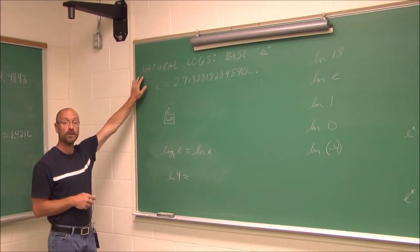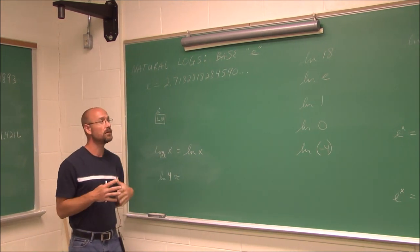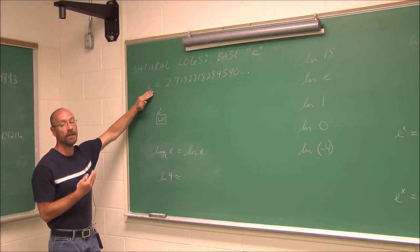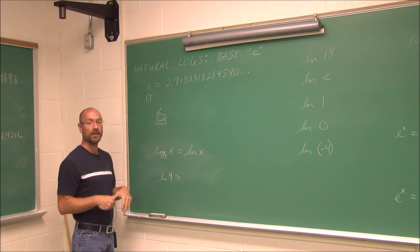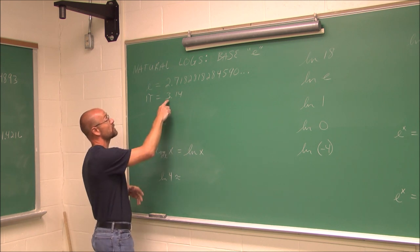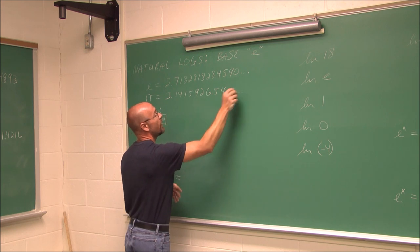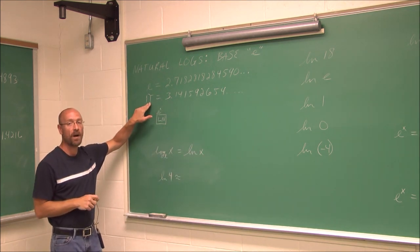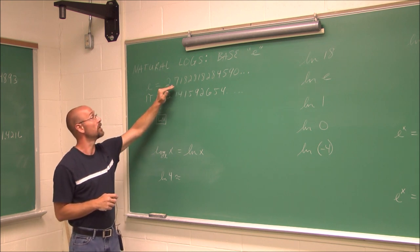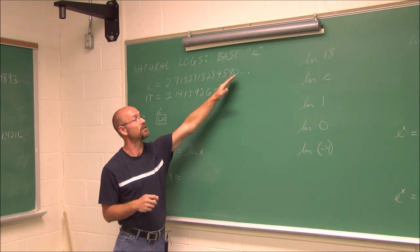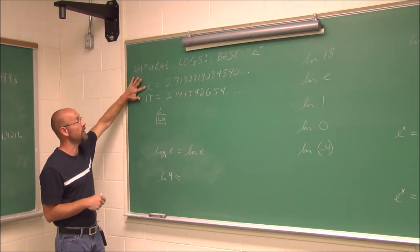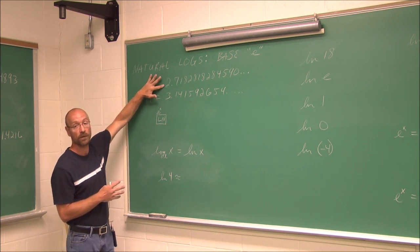Let's look at another type of log called the natural log. This is base e. We touched on the natural number in a previous video. E is nothing more than an irrational number. If we think about pi — 3.14159... — we should become familiar with e in the same way. E is just a symbol representing the irrational number 2.71828182845... and the decimal neither terminates nor repeats.